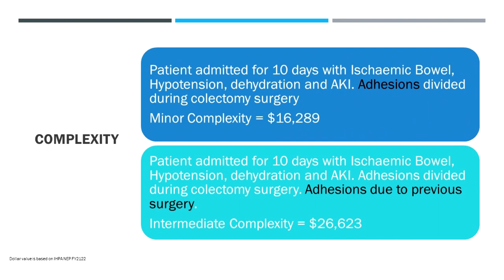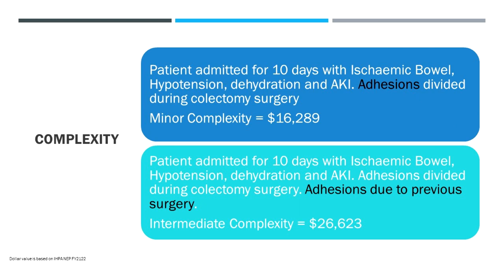Here's an example. So this patient's been admitted for 10 days with an ischemic bowel, hypotension, dehydration and acute kidney injury. Sounds like it could come in any day of the week, emergency department presentation. And they had adhesions that were divided during a surgery for colectomy and that would come out with minor complexity around $16,000 funding. Obviously that person needed appropriate care. Now let's take the same person with just slight changes to the wording that better reflect the specificity of what happens. Again, same issues, and the only change here is we've gone the adhesions due to previous surgery, puts them into an intermediate complexity. So we provided exactly the same care in the same scenario but those extra four words almost doubled the funding up to $26,500.